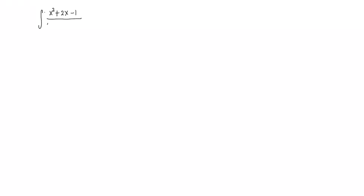We will be solving another example of evaluating an integral using partial fractions. We are going to evaluate the integral of x squared plus 2x minus 1 over 2x cubed plus 3x squared minus 2x dx. The first thing to do is check whether the fraction is proper or improper. As we can see, it's a proper fraction with a degree in the denominator greater than that of the numerator.